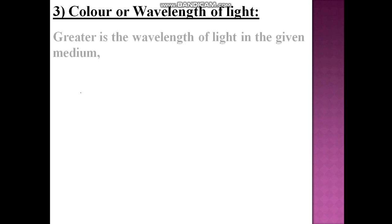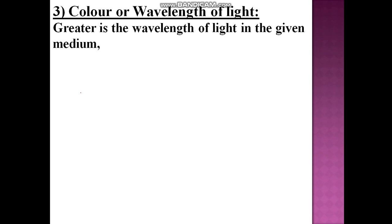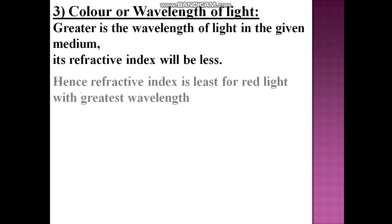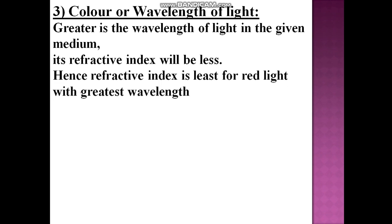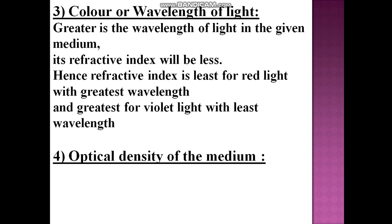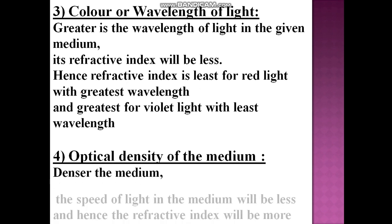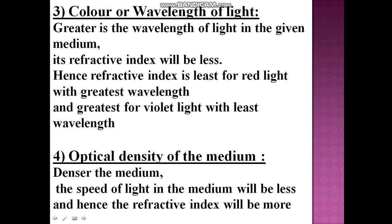The third factor is color or wavelength of light. Color is defined by wavelength — greater the wavelength of light in the given medium, its refractive index will be less. Hence, refractive index is least for red light (greatest wavelength) and greatest for violet light (least wavelength). The fourth factor is optical density of the medium — denser the medium, the speed of light will be less and hence the refractive index will be more.